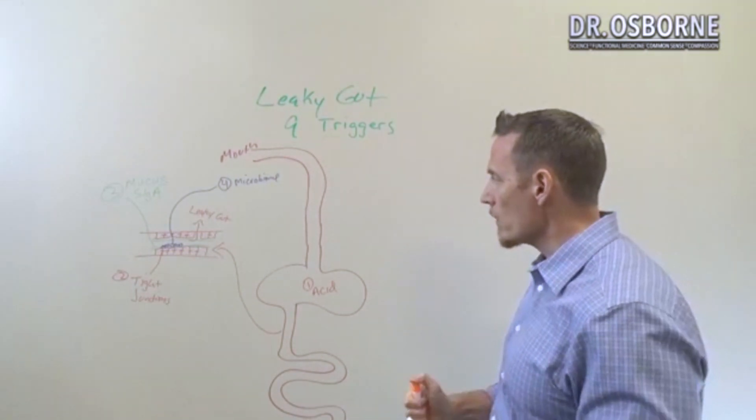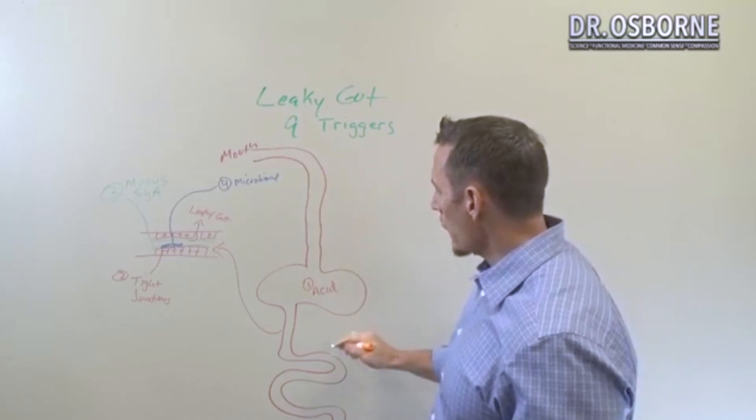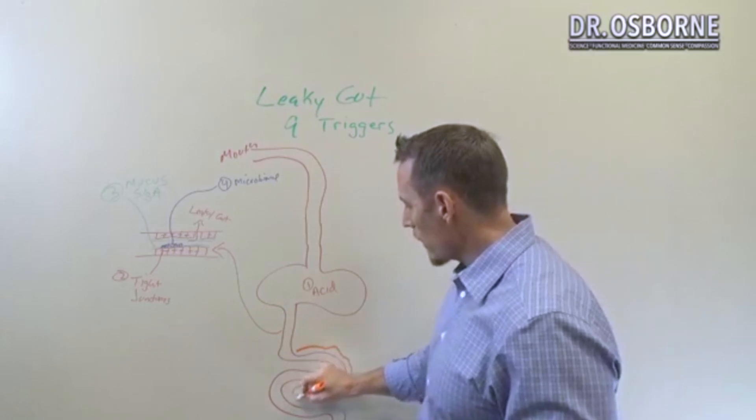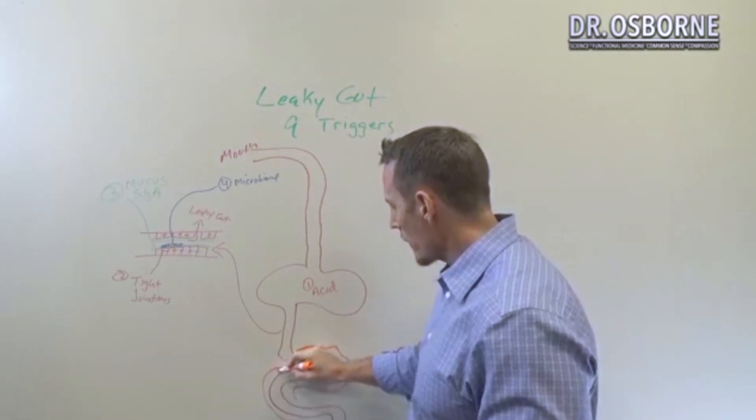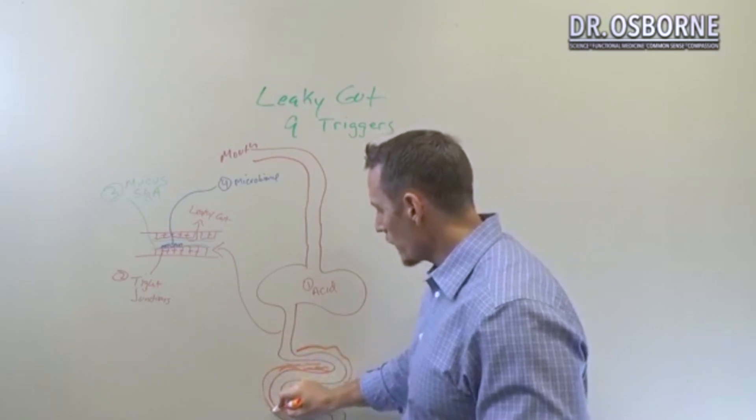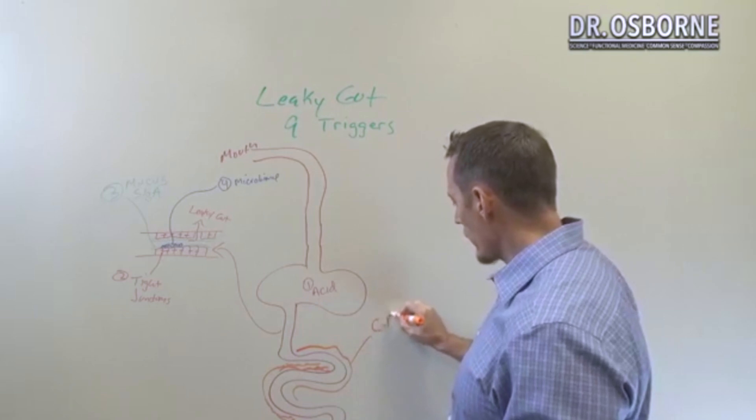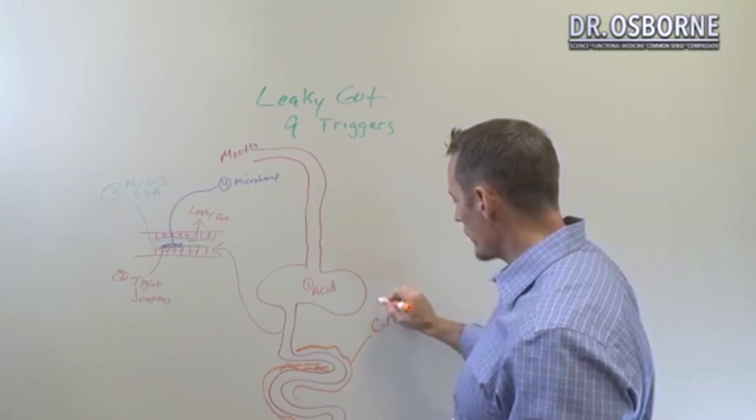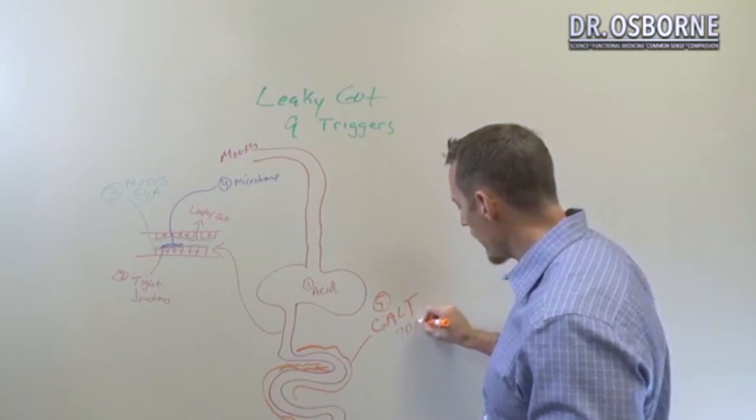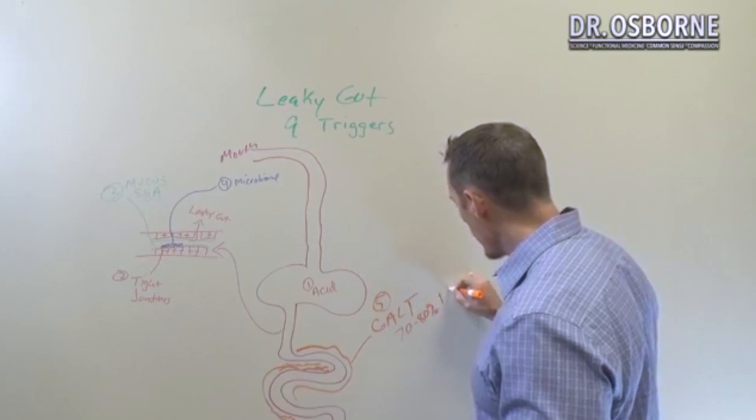So the fifth one is really behind the intestinal lining. Think of it as a web-like mesh of material behind the intestinal lining that is full of immune cells. As a matter of fact, this is called the GALT - the gastro-associated lymphoid tissue. It's the fifth barrier and it represents about 70 to 80 percent, depending on which scientific article you read, of your entire immune system.